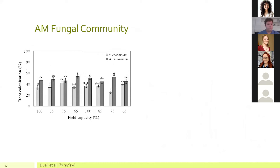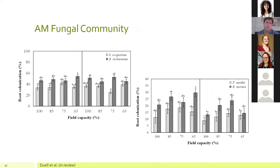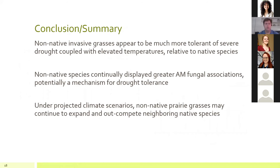Looking at the AM fungal community, in both species groups the non-native species was associated with greater abundances of AM fungi, which may suggest the fungi are providing a means to allow invasive plants to preempt resources from the natives — germinating more quickly and pulling up more phosphorus, nitrogen, and soil moisture with the aid of these fungi. In conclusion, the non-native grasses appear to have a greater biomass buffer under drought, and they continue to display greater fungal associations, which could be a mechanism for drought resistance or tolerance.